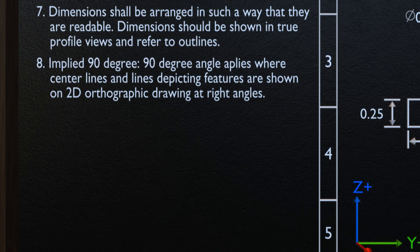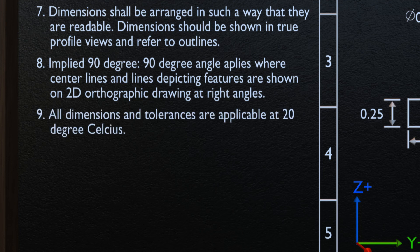To know more about axes and datums, subscribe to my channel and look for that video. The ninth fundamental rule says all dimensions and tolerances are applicable at 20 degrees Celsius, unless otherwise specified. This one is quite straightforward; if you wish to know more, please leave a comment.